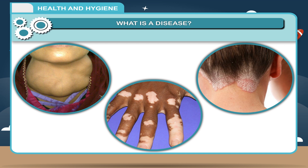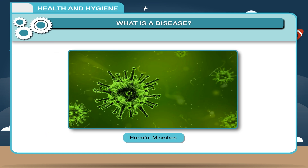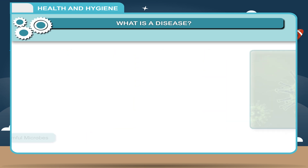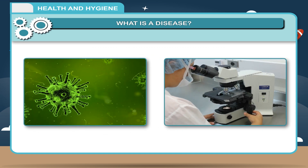In your previous class, you have already learnt about deficiency diseases caused by deficiency of different nutrients in our body. Now, we will learn about some diseases that are caused by harmful microbes. Microbes are tiny living organisms that cannot be seen with the naked eyes. They can be seen under a microscope. They grow and multiply rapidly and may spread various diseases.